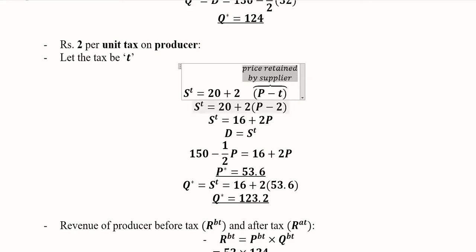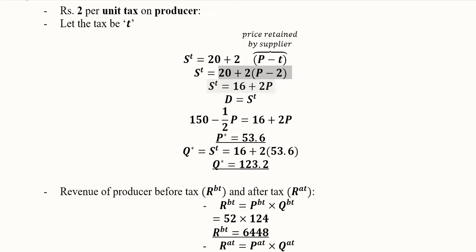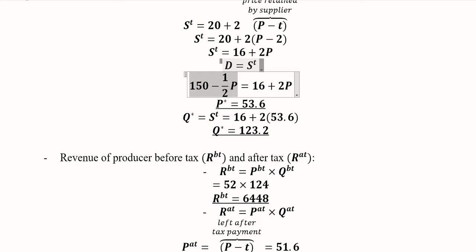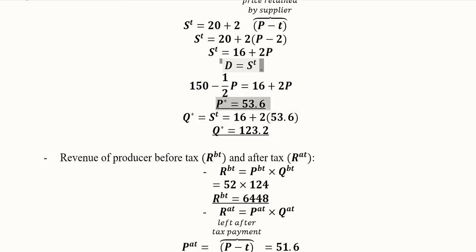The value of tax per unit is 2, and since price is also per unit, the difference of per unit price minus per unit tax is logical. We simplify this expression to get the new supply function after tax. We then equate the original demand function, which remains unaffected, with the post-tax supply function. This gives us the new equilibrium price and the equilibrium output, obtained by substituting the equilibrium price into the after-tax supply function.